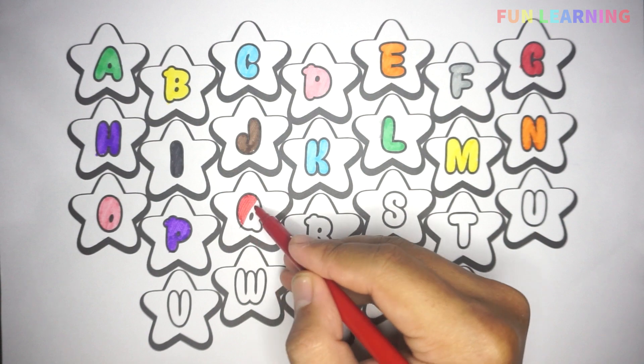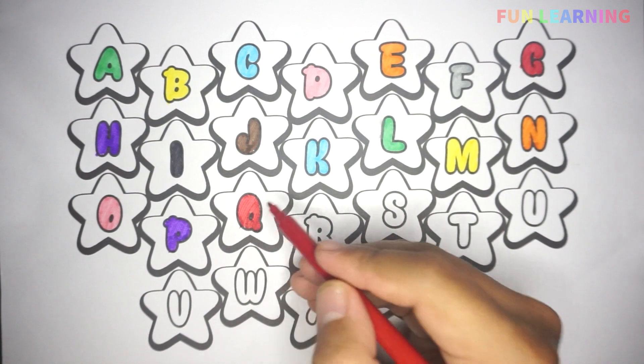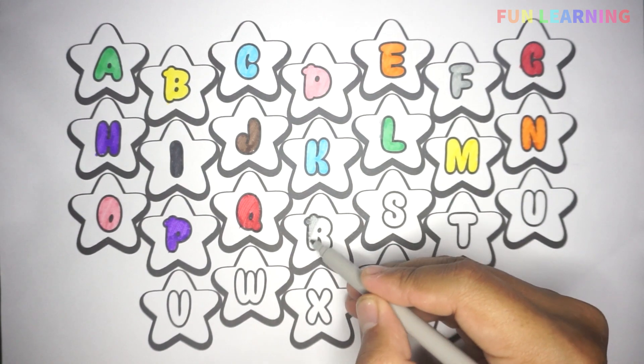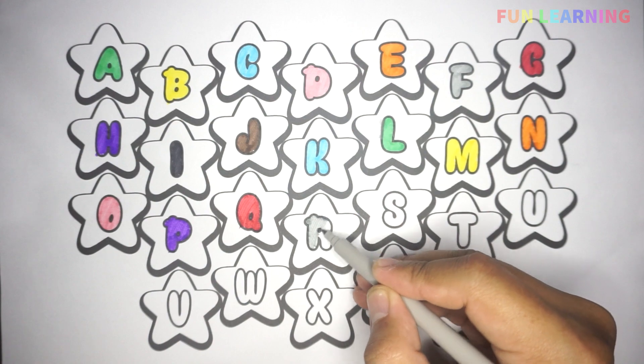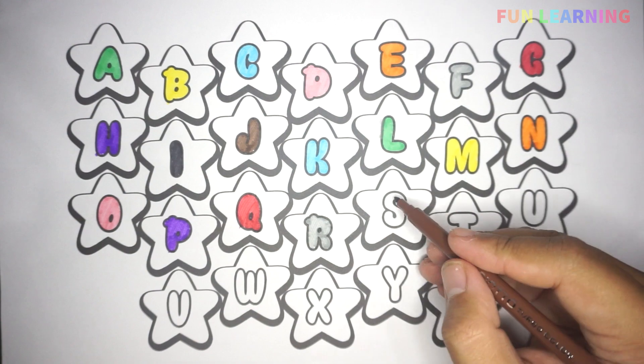Q, Q for queen, gray color. R, R for rainbow, brown color.